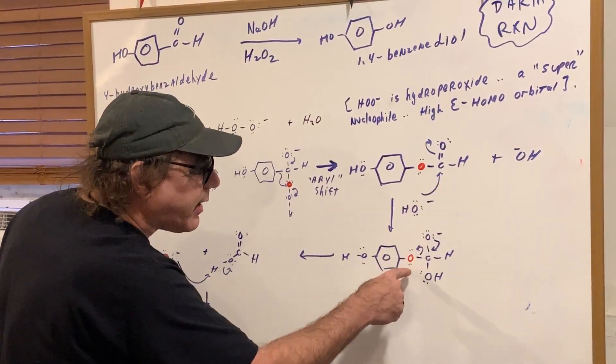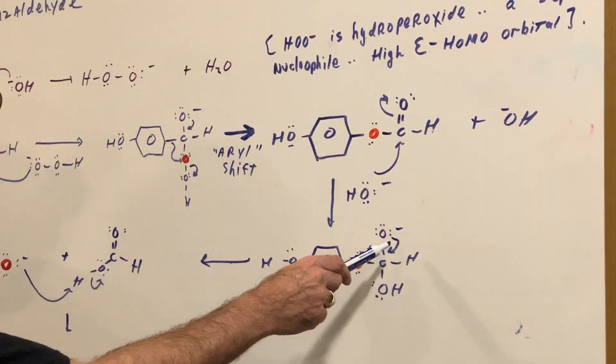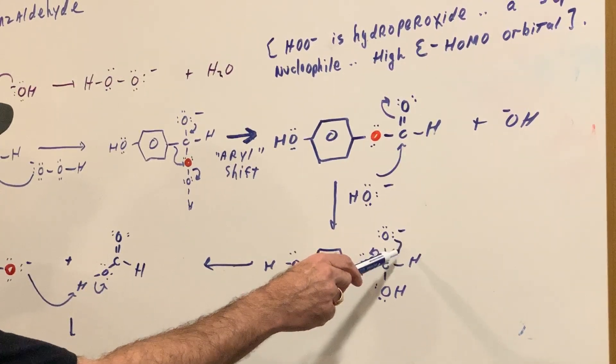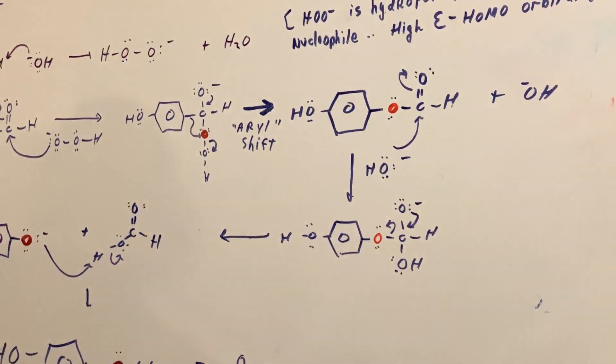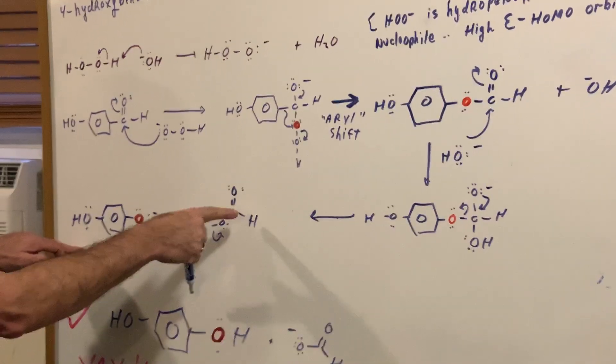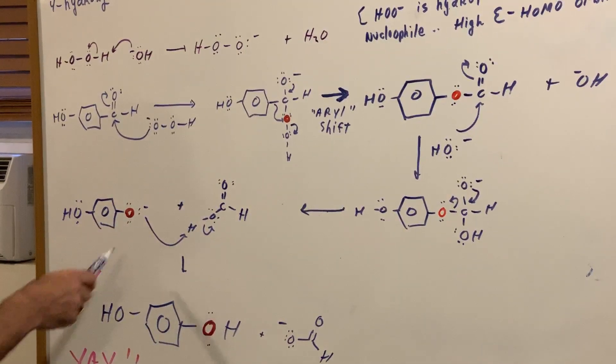That OH- comes back, attacks the carbonyl again, and now prepare for departure. As you can see, we now leave this group here. Electrons move here, and we now have the formic acid. We have the formic acid, and here we have our anion.